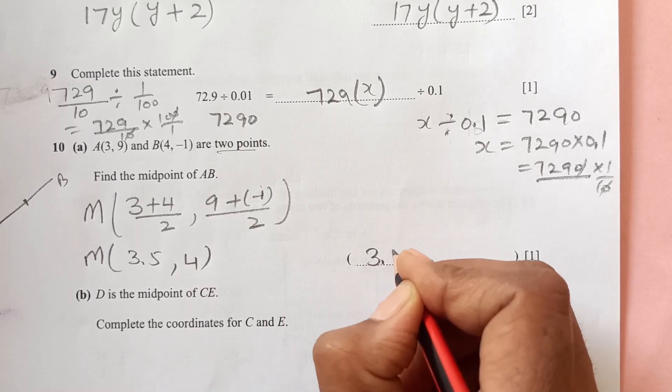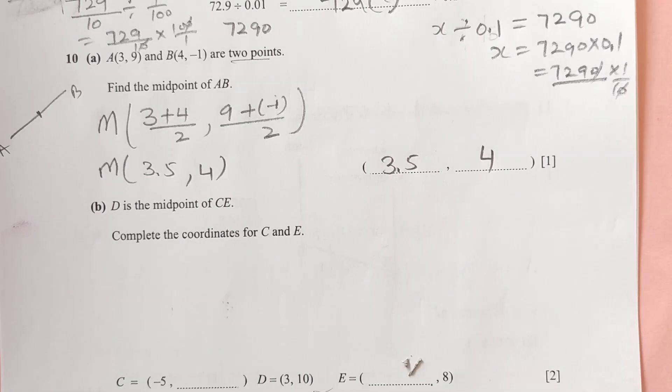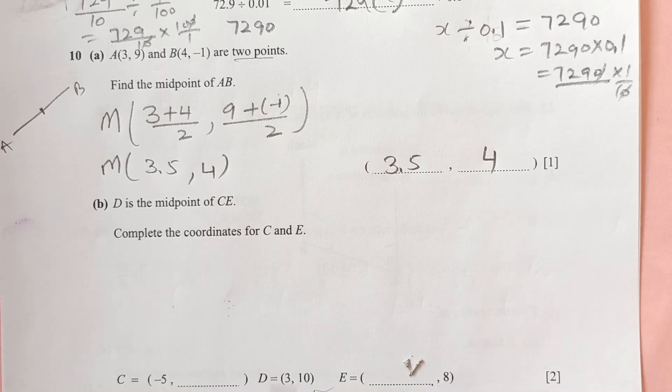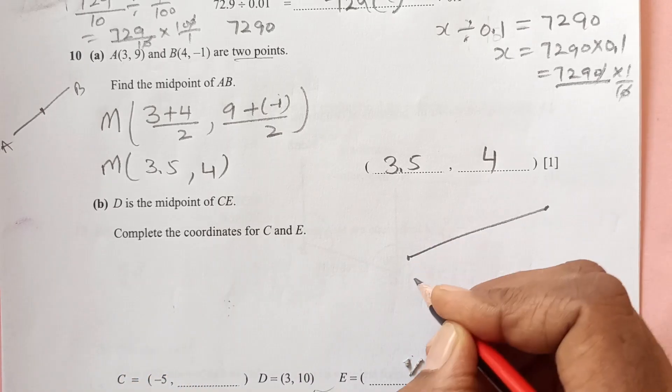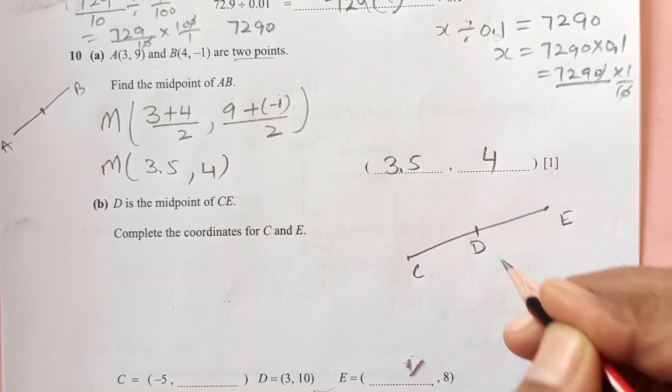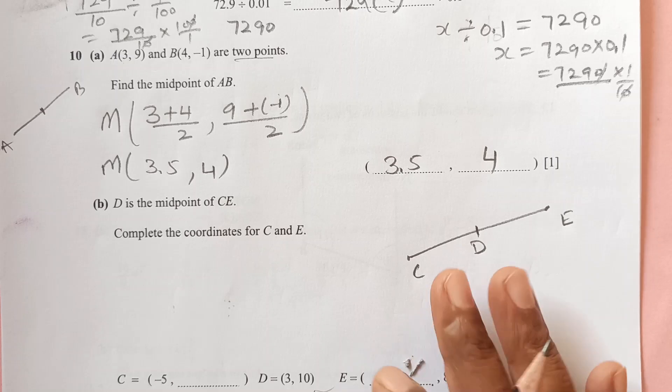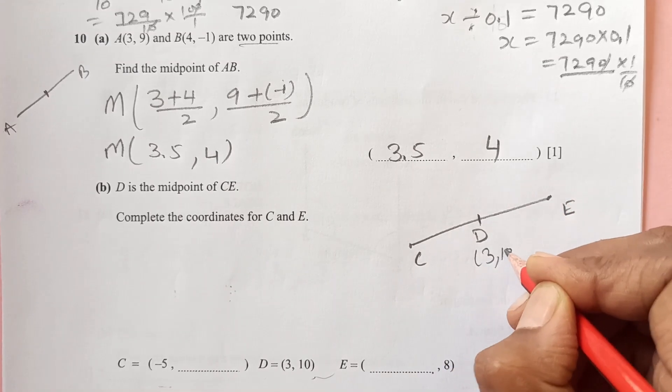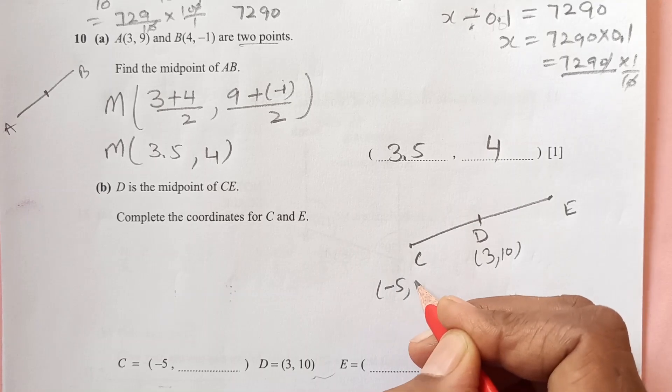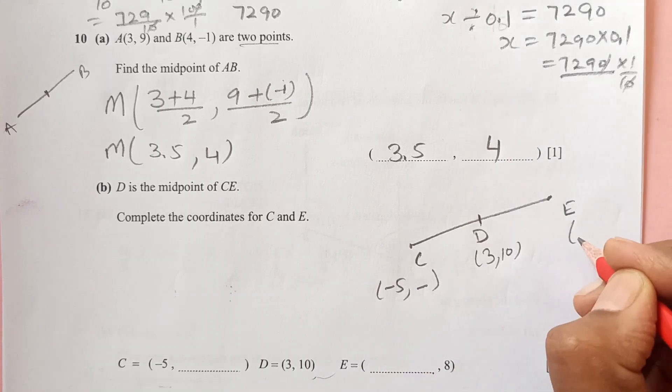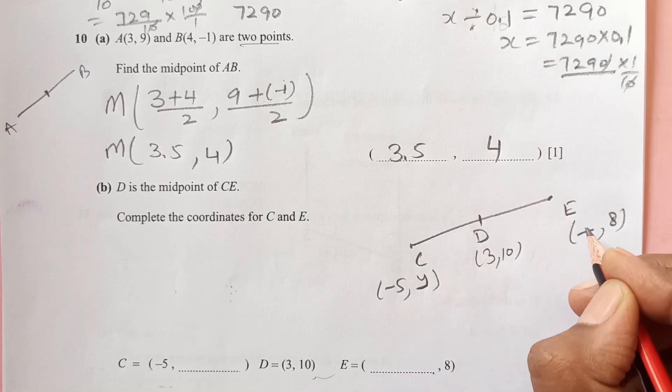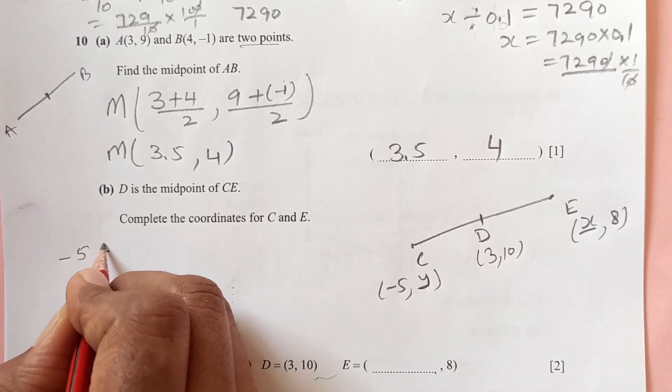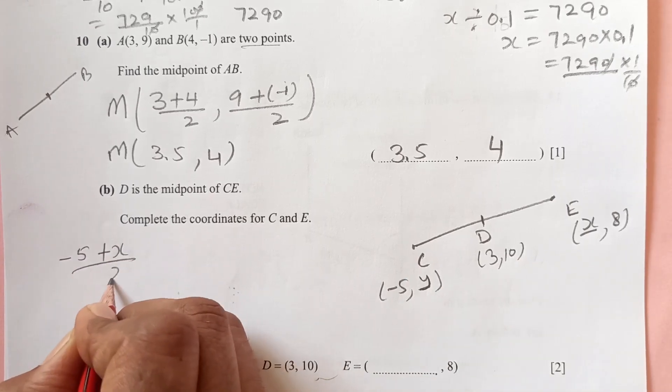Now D is midpoint of CE. Complete the coordinates of C and E. D is midpoint of CE, so we have C and E, and D is midpoint. We are given C and D is 3, 10, and C is negative 5. Let's say this is y and this is x.